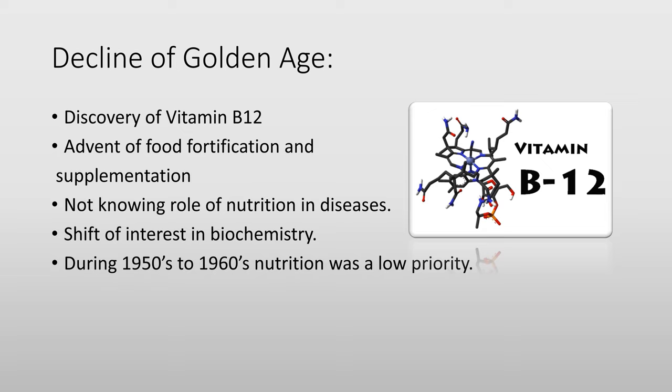Moving on to the next slide: the Decline of the Golden Age. The discovery of Vitamin B12 arguably should belong in the Golden Age, but what happened was that when pernicious anemia was discovered, Vitamin B12 deficiency was identified as its cause — meaning a deficiency of Vitamin B12 leads to pernicious anemia.